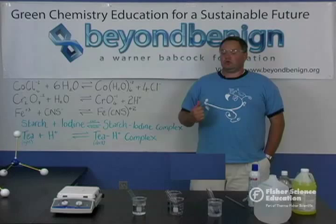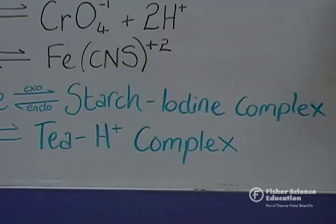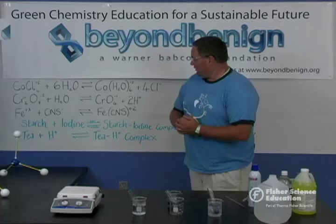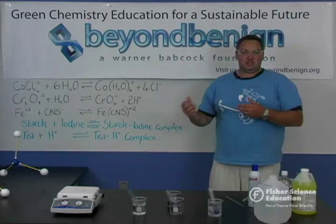The forward reaction is exothermic and the reverse reaction is endothermic, so the addition or removal of energy is going to shift this equilibrium. Le Chatelier's Principle states that any stress placed on an equilibrium will cause a shift to reduce that stress. By stressing the reaction either by chilling it or by heating it, we will cause a change in the position of equilibrium.